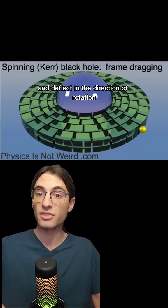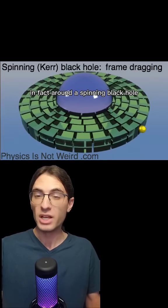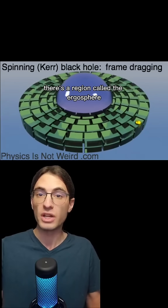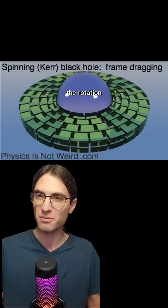the bob will begin to fall and deflect in the direction of rotation. In fact, around a spinning black hole, there's a region called the ergosphere, in which you can only orbit in one direction. You'd have to move faster than light to orbit against the rotation.